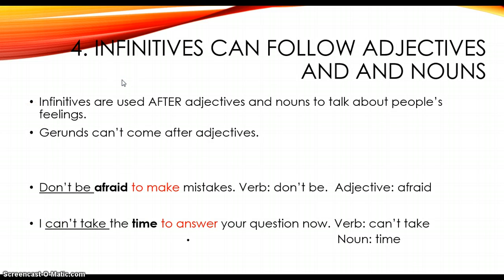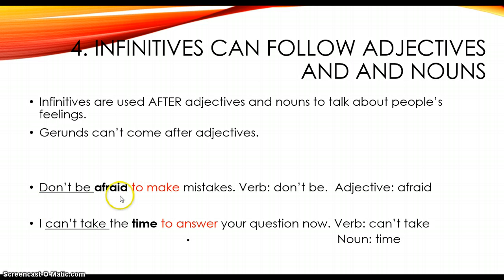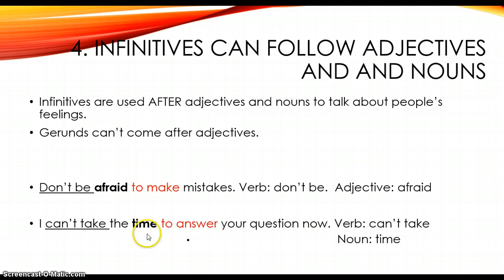Infinitives can follow adjectives and nouns. Infinitives are used after adjectives and nouns to talk about people's feelings. Note that from the gerund video, gerunds can't come after adjectives. An example of an infinitive following an adjective: the adjective is 'afraid,' the verb is 'don't be,' and the infinitive is 'to make.' An example following a noun: 'I can't take the time to answer your question now' — 'can't take' is the verb, 'time' is the noun, and 'to answer' is the infinitive.